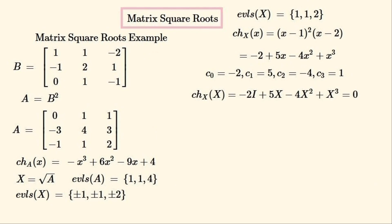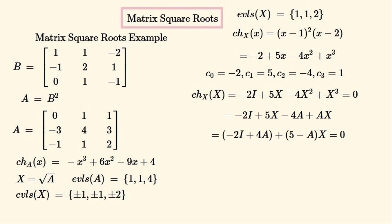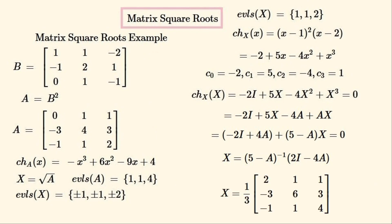If we substitute the matrix X into its own characteristic polynomial, it will equal zero by the Cayley-Hamilton theorem. We substitute A in for X² in this polynomial, then gather all terms containing X together and all terms without X together. We quickly manipulate this equation to give us X in terms of A and the coefficients of the characteristic polynomial. After substituting these values in, we get X equal to a specific matrix, which is verified to be a square root of A by squaring it.